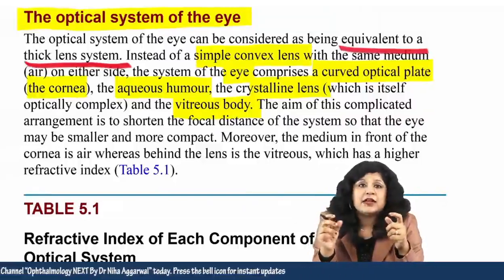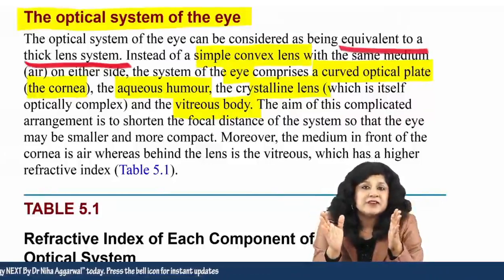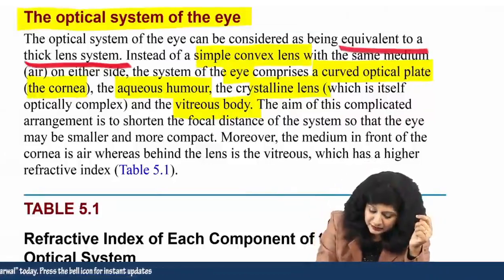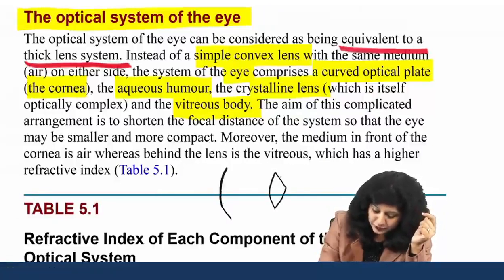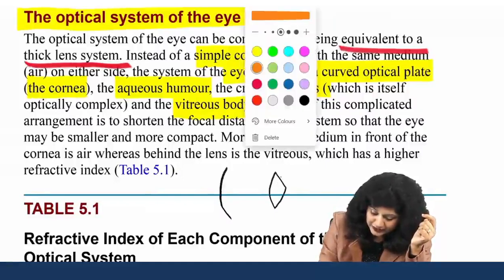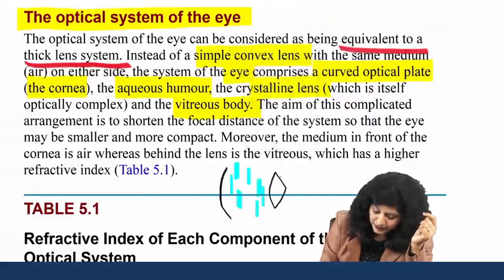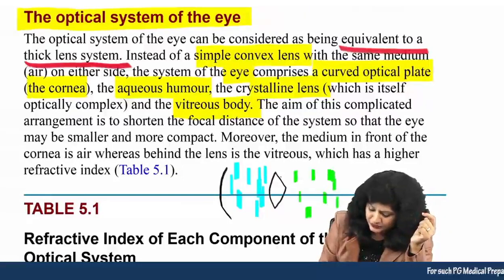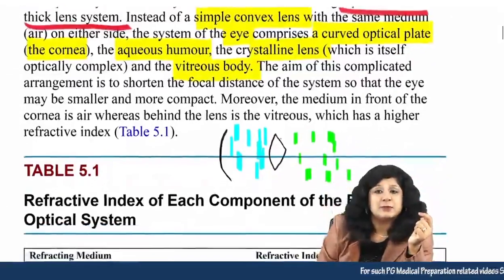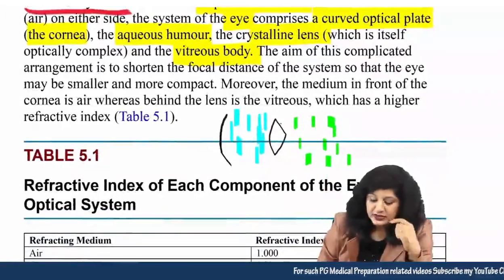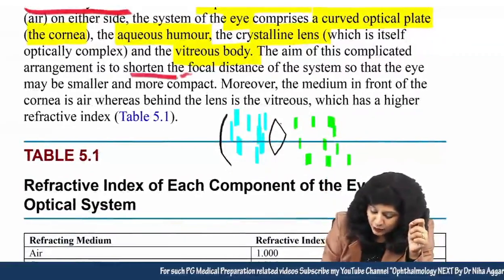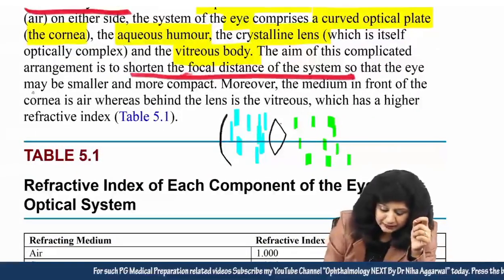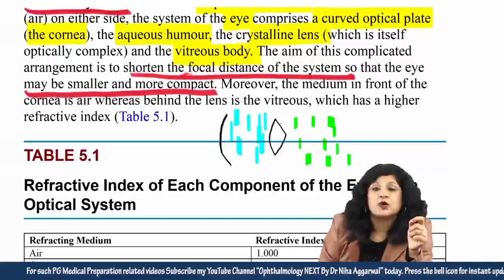Because all the structures are in a very compact area — cornea, aqueous humor, lens, and vitreous humor — this complicated arrangement shortens the focal distance of the system so that the eye can be smaller and more compact.